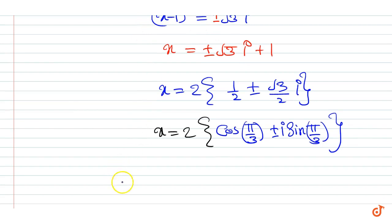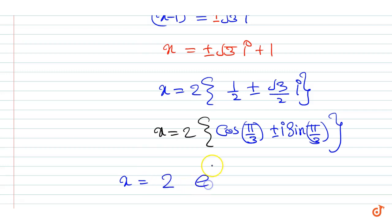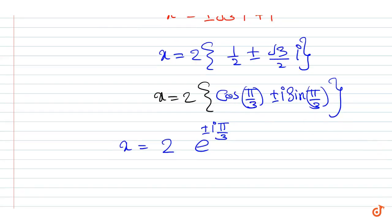We can write x = 2 · e^(±iπ/3). Now let alpha = 2 · e^(iπ/3) and beta = 2 · e^(-iπ/3).